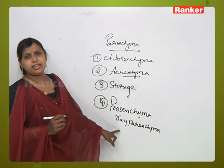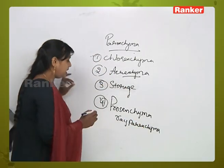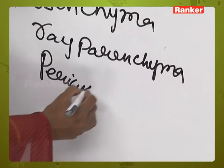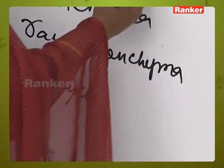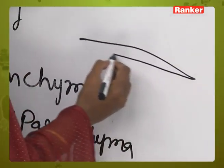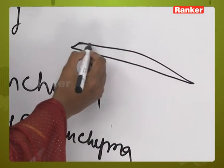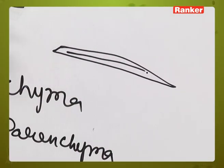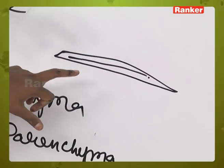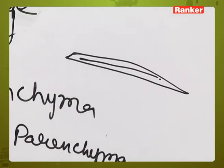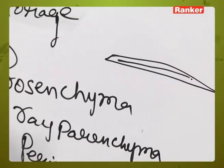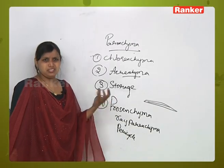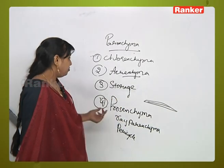Prosenchyma, also called ray parenchyma, is normally seen in the pericycle. This type of tissue is present in almost all pericycles and is helpful in pericycle function.